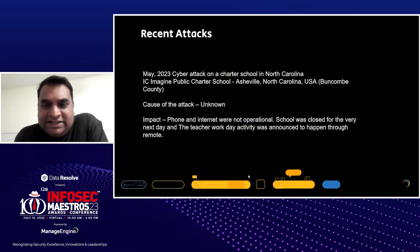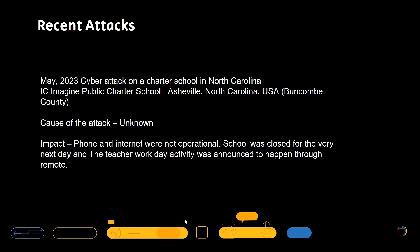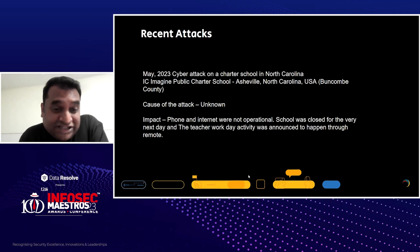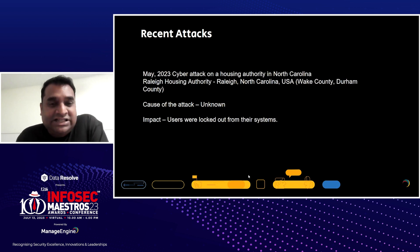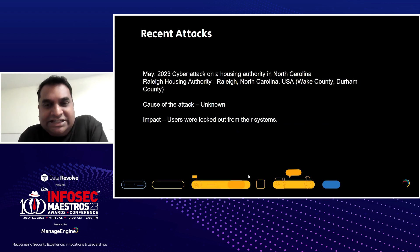I'll start with a few incidents that happened across the globe and how the previous quote is associated with them. The first incident happened in May 2023 in North Carolina at a school — there was an attack, and the impact was that the phone and internet were not operational. The school had to postpone an event, which was eventually conducted online because the internet got disrupted. The second attack resulted in users being locked out of all of their machines. The factor connecting these two attacks is that the cause of the attack is still unknown.